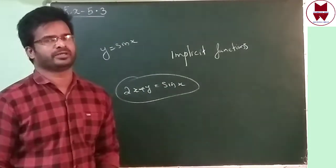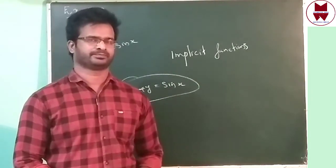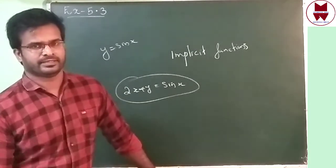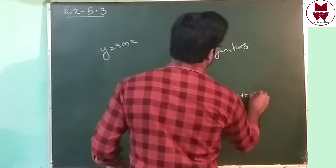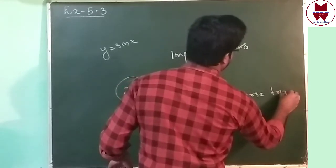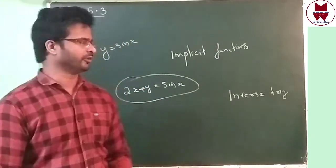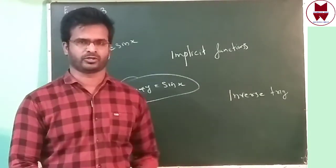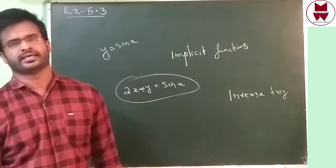In Exercise 5.3, question number 1 through 28, we will do implicit functions. We will use all the normal formulas only. The remaining questions involve derivatives of inverse trigonometric functions — that is the second type. For inverse trigonometric functions we will use some formulas we have not studied till now. First, we can do the implicit function questions, then after we can see the formulas for inverse trigonometric functions.